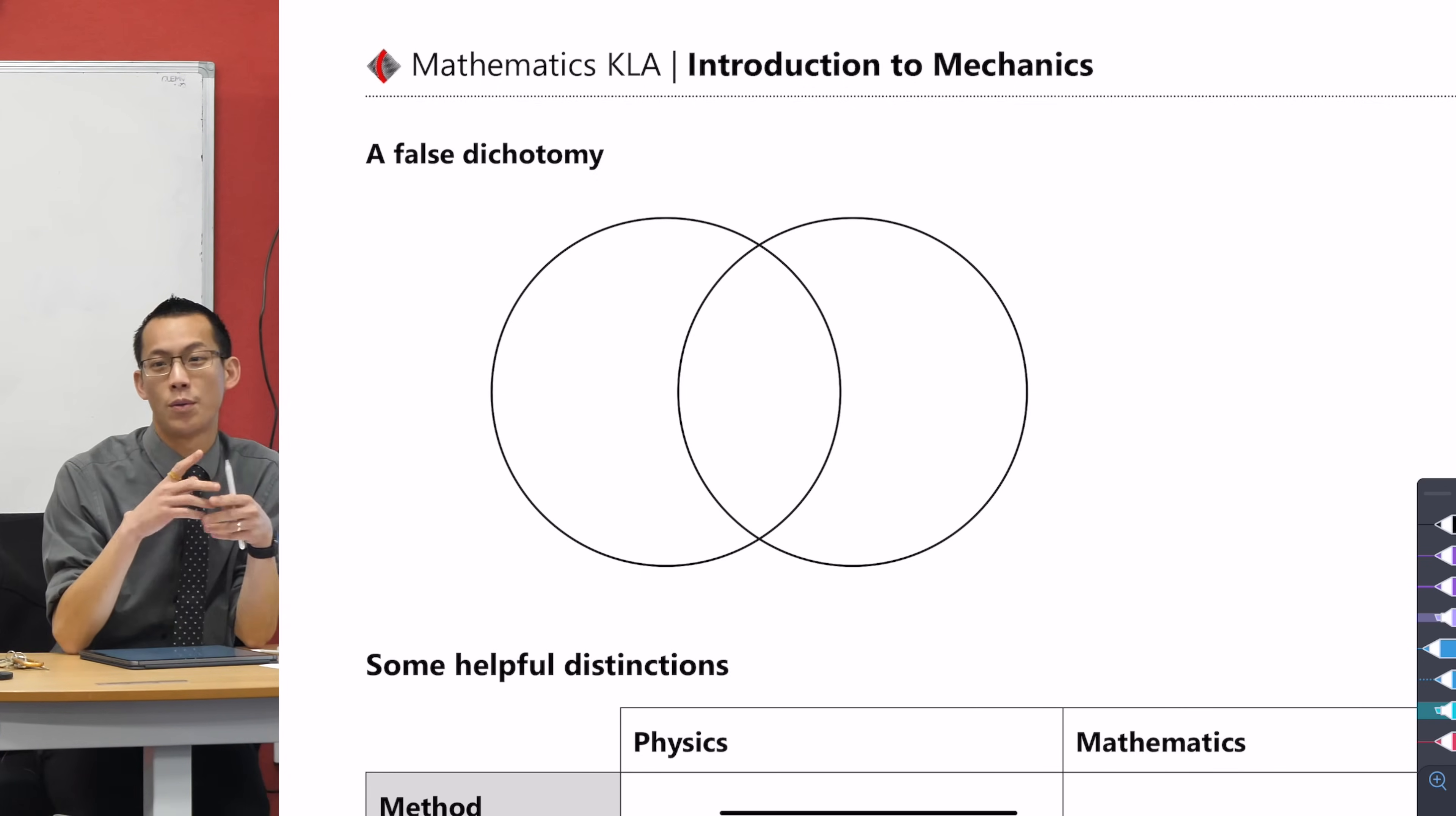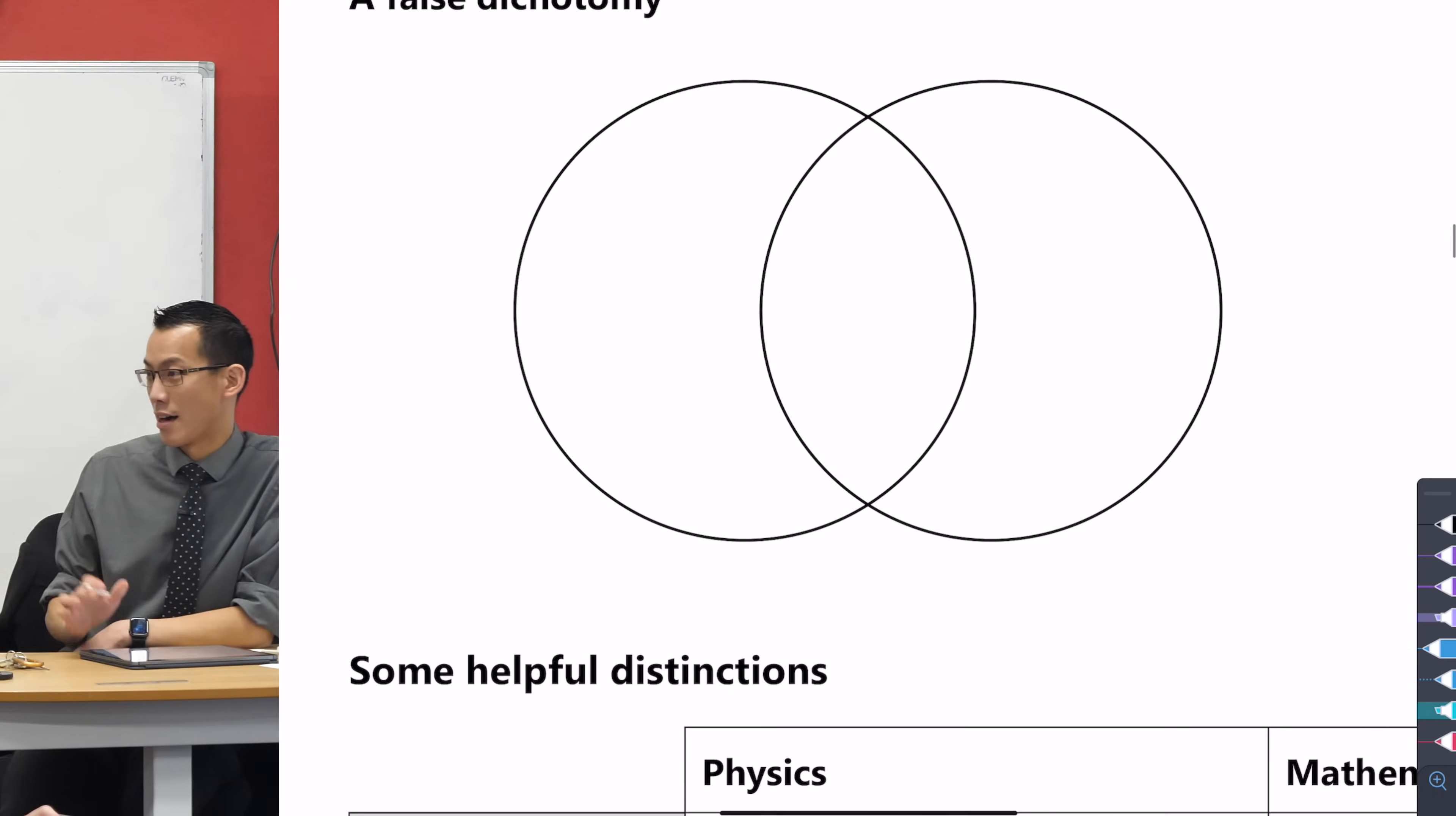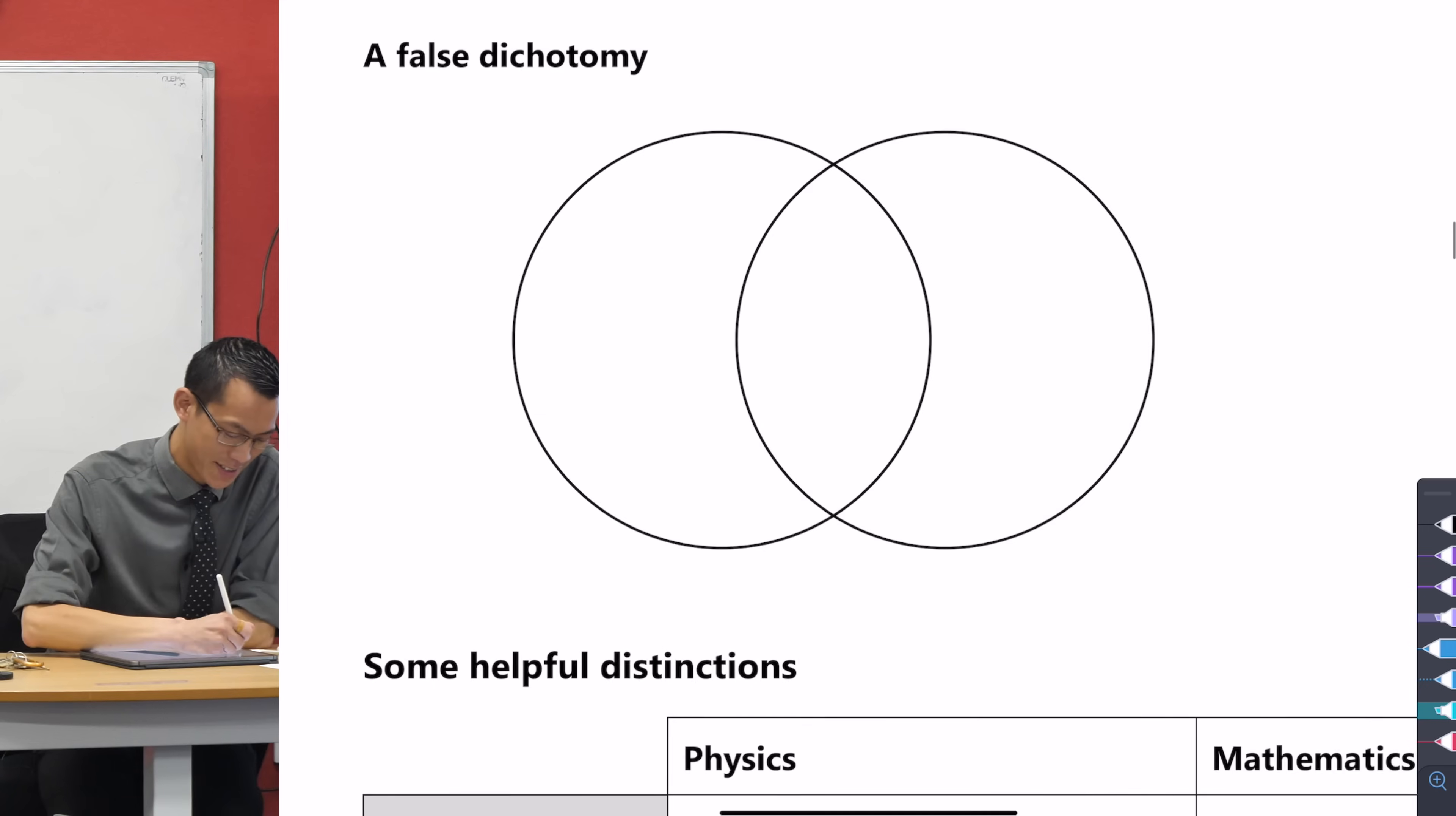There are some differences and some commonalities between mathematics and physics as you study them. And that's kind of what we need to state right out of the gate. Some of this will be familiar from Extension 1, but other bits of it will be new. So these two overlapping circles in our Venn diagram here represent - anyone want to guess? Mathematics and physics. Thank you Emmanuel.